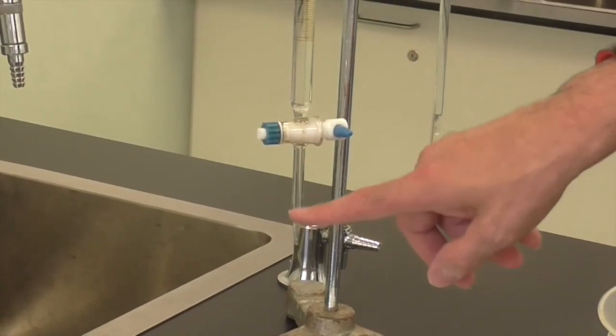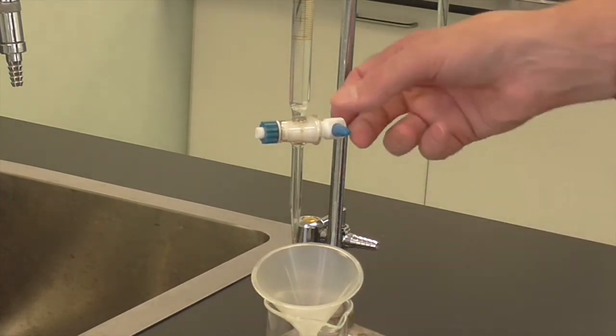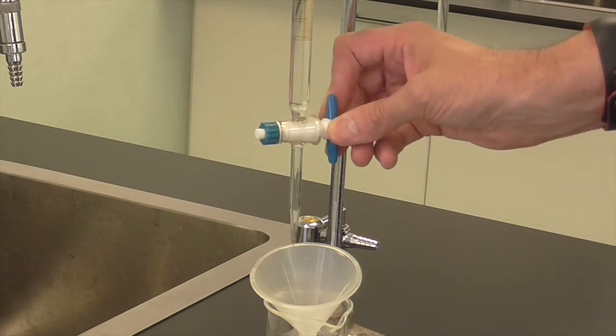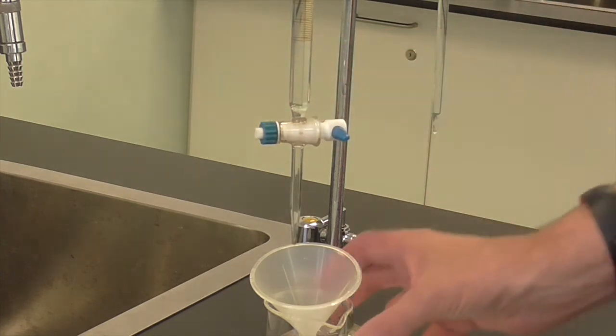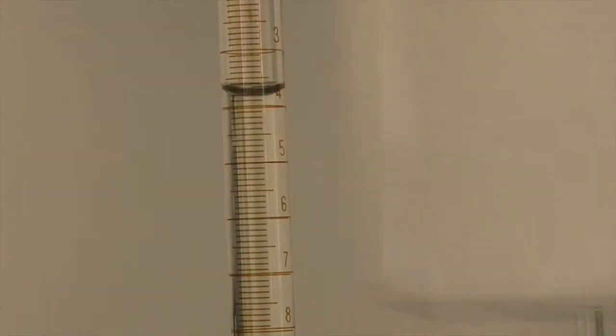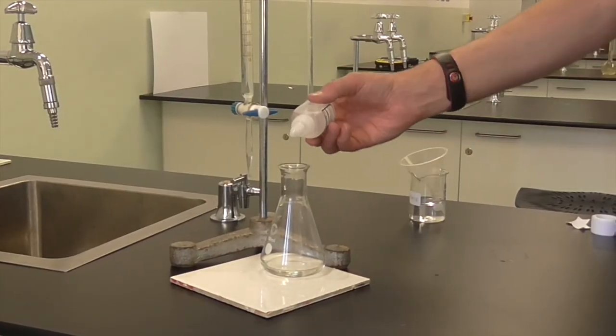Before using your burette, check for an air bubble in the bottom. To get rid of the air bubble, place the beaker of base underneath and gently open the stopcock and close it. That will get rid of the air bubble down the bottom so we have the right volume in the burette. Read off your initial value, in this case 3.8 mils. Add several drops of indicator, in this case phenolphthalein.